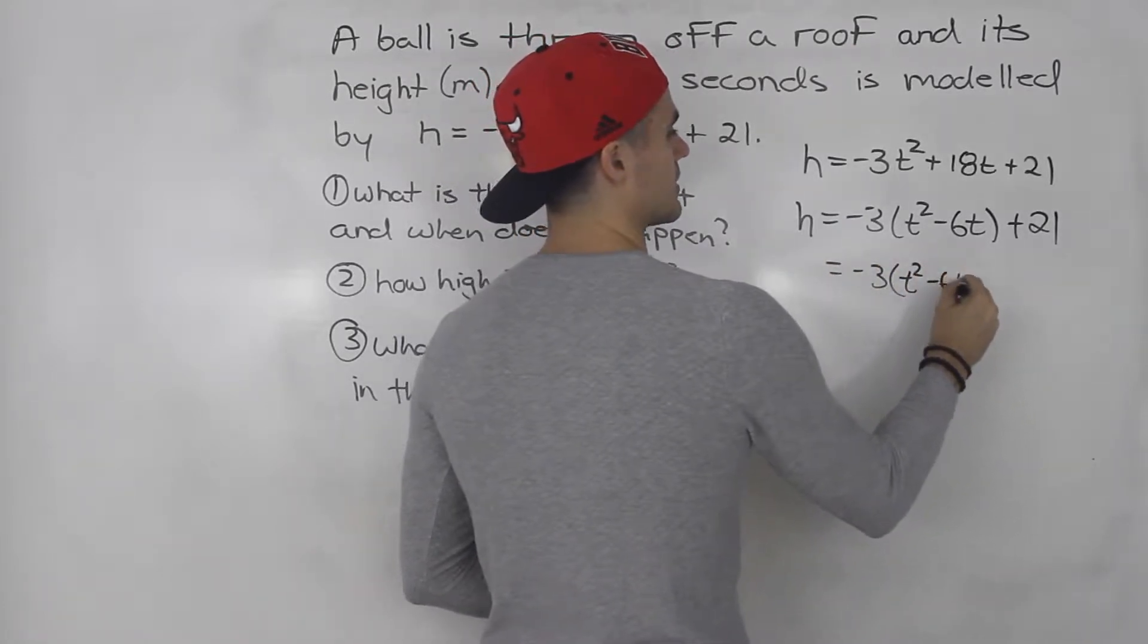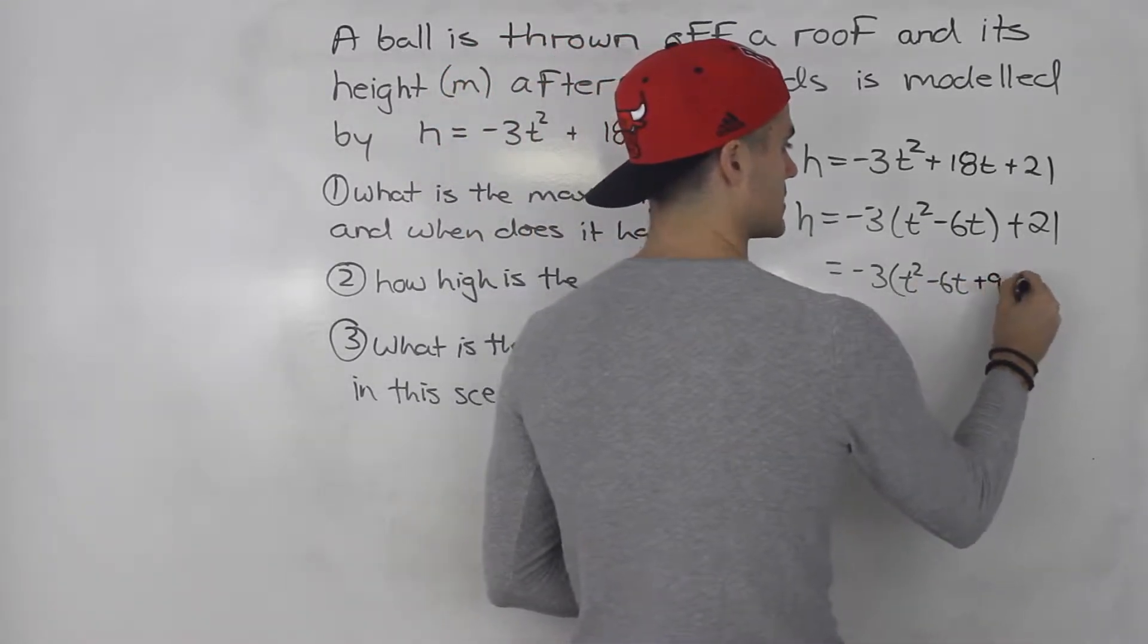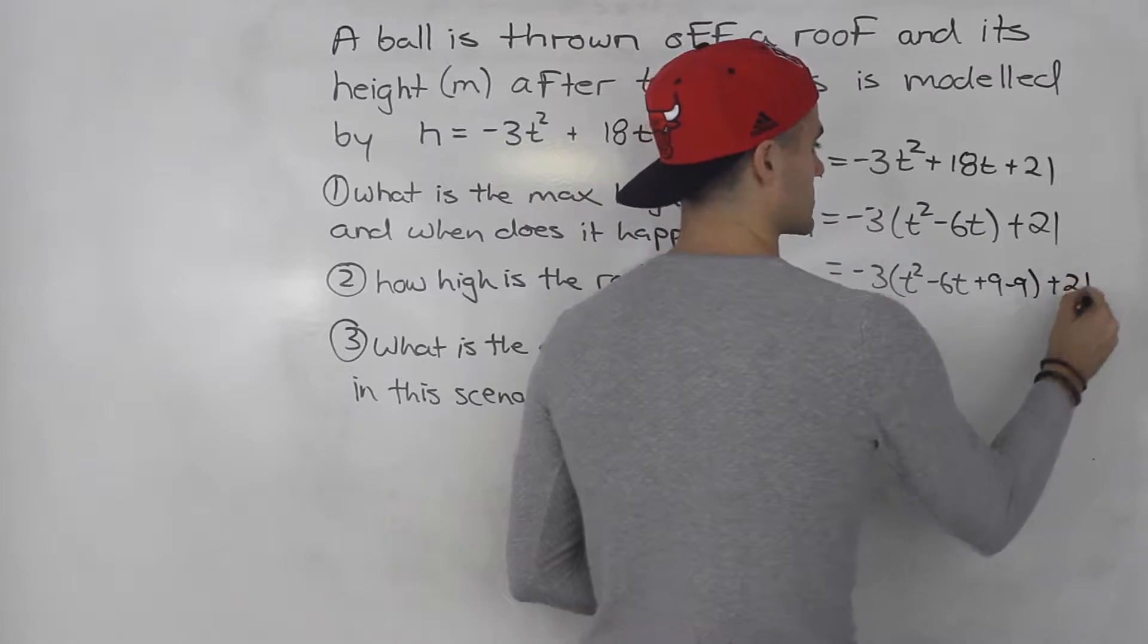We would take half of negative 6, which is negative 3, square it, plus 9 minus 9. Keep the positive 21 outside.